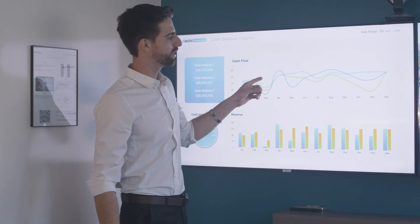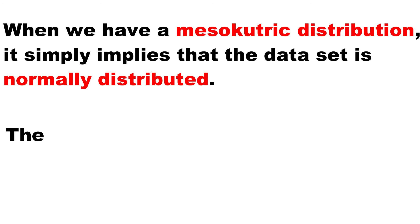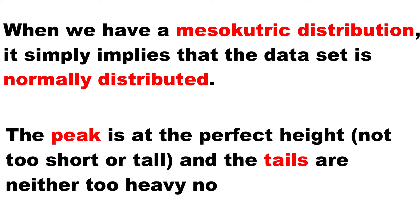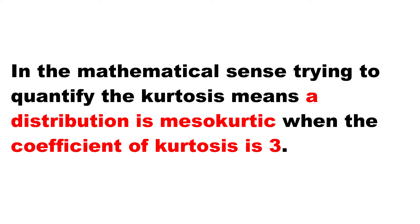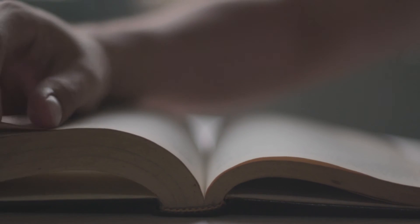Basically we have three types of kurtosis: we have the mesokurtic, we have the leptokurtic, and we have the platykurtic. When we have a mesokurtic distribution, it simply implies that that distribution is actually a normal distribution — the peak is at the perfect height, not too tall and not too short, and the tails are perfectly balanced, meaning not too heavy or too light. In the mathematical sense, a mesokurtic distribution is said to have a kurtosis value of three.